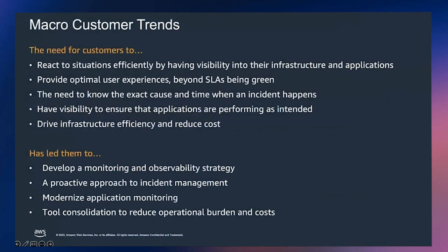Before diving into observability and its criticality, let's understand some macro customer trends. Customers are looking to react to situations efficiently by having visibility into their infrastructure and applications. They want to provide optimal user experience beyond SLAs — being green at the SLO level. For example, a website might be up and running, but the actual user experience interacting with it might be slow. So while your SLA for website uptime is green, the actual SLO for user experience is red.